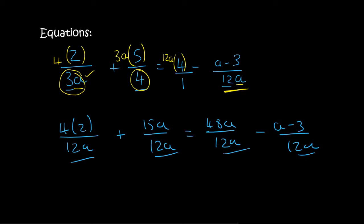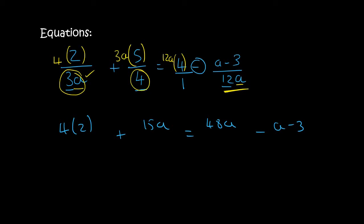But because it's an equation, we don't need all of those denominators, so we ignore them. So what's very important is that this minus is in front of this entire term, so we must have a bracket over there. Usually we would have had a bracket if we multiplied by a certain number, but because it already had the 12a, we didn't do anything to that one. And now it just becomes a normal equation, so 4 times 2 is 8, plus 15a equals 48a. This minus will just jump in there now and become minus a plus 3.